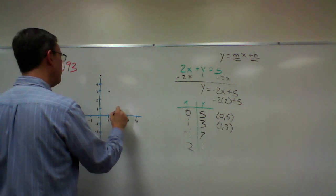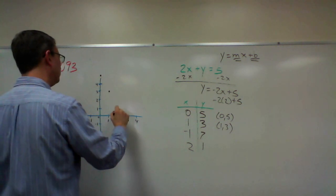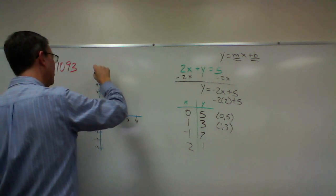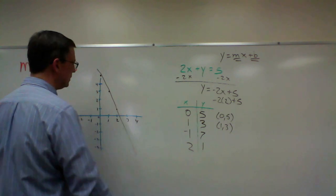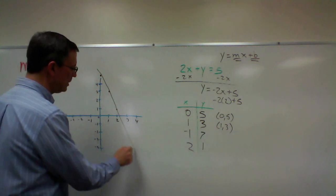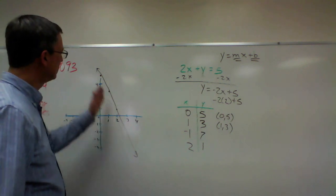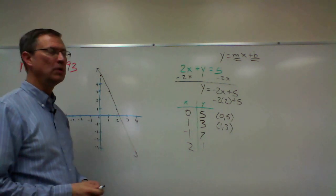So we have, I'm going to ignore that one since it's way off the graph and just connect these. And then it's a good idea to go to the end of the graph and put an arrow on both ends. I should have used a ruler to do that.